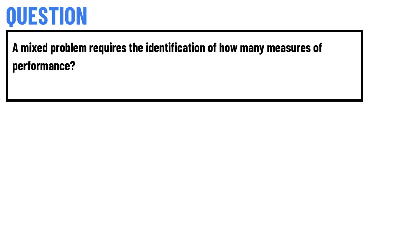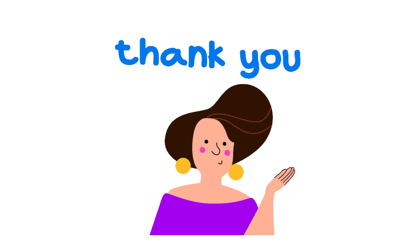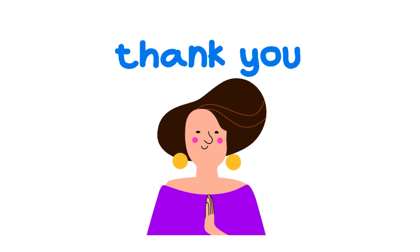So let's get on the questions. Our today's question is: a mixed problem requires the identification of how many measures of performance? The correct answer to the question is 1.